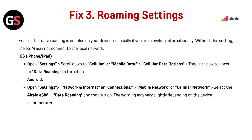For iPhone and iOS or iPad: open Settings, scroll down to Cellular or Mobile Data, then tap Cellular Data Options. Toggle the switch next to Data Roaming to turn it on.